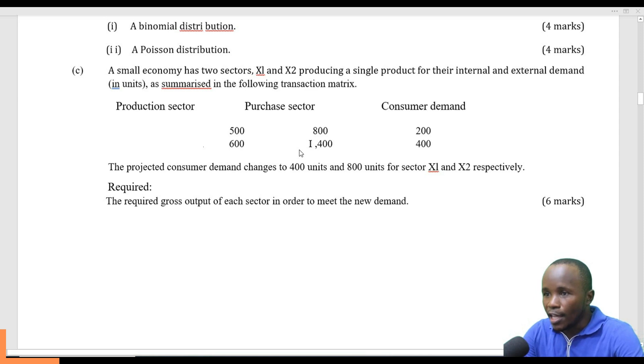The question reads: a small economy has two sectors, X1 and X2, producing a single product for their internal and external demand in units. The projected consumer demand changes to 400 and 800 units for sector X1 and X2 respectively.